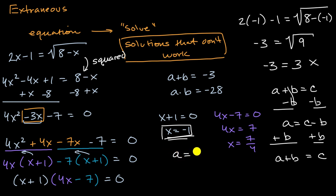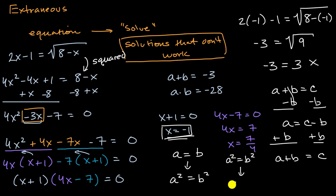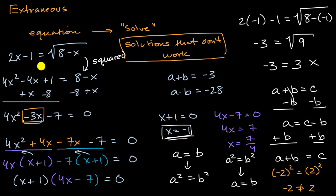If we know a equals b, then squaring gives a squared equals b squared. But going the other way — if a squared equals b squared — does that mean a equals b? No. For example, negative two squared equals two squared, but negative two is not equal to two. So squaring is not reversible, and that's what happened here. We squared, deduced our way through to x equals negative one or x equals 7/4, but we can't always reverse back to the original equation.